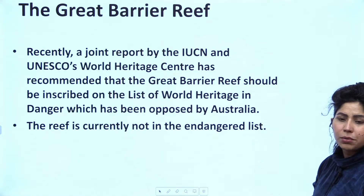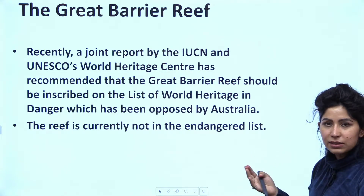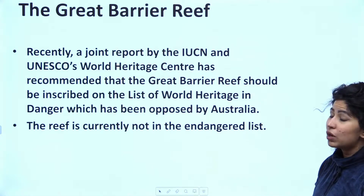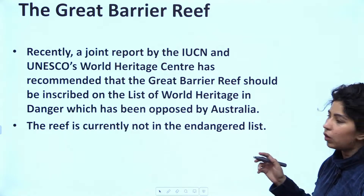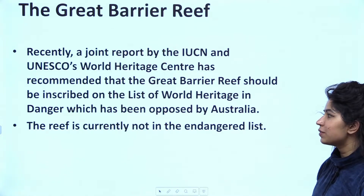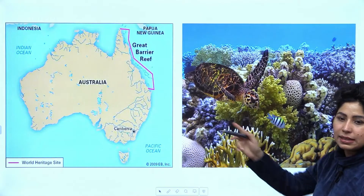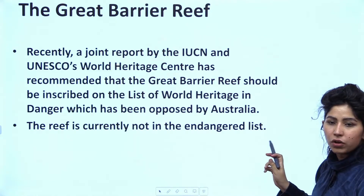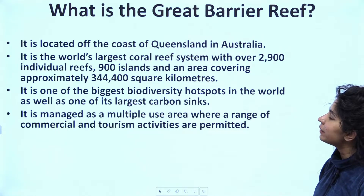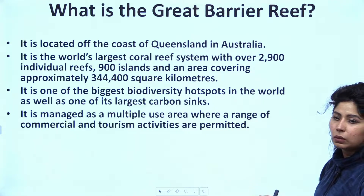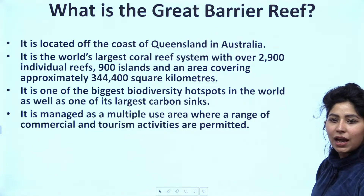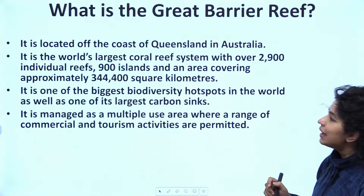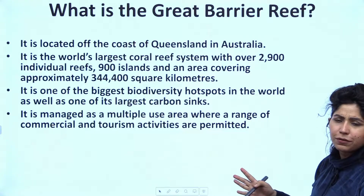There was a joint report by IUCN — which releases the Red Data List regarding endangered or vulnerable species — and UNESCO's World Heritage Centre. The report has recommended that the Great Barrier Reef should be inscribed on the list of World Heritage in Danger. This has been opposed by Australia because the reef is near Australia, Australia is putting in efforts, and it is very important for Australian tourism and economy. The Great Barrier Reef is located off the coast of Queensland in Australia — it is the world's largest coral reef system with over 2,900 individual reefs and 900 islands, covering approximately 3,44,000 square kilometres.